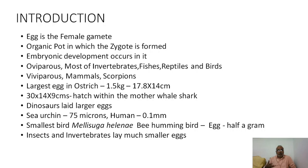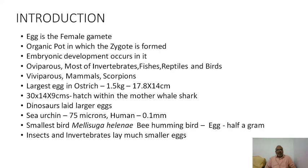Viviparous animals develop the embryo inside the mother's reproductive system. In mammals, intrauterine development occurs during the gestation period. The important speciality of mammals, except prototherian egg-laying mammals, is that the entire embryonic development occurs within the uterus and all nutrients are supplied by the mother.